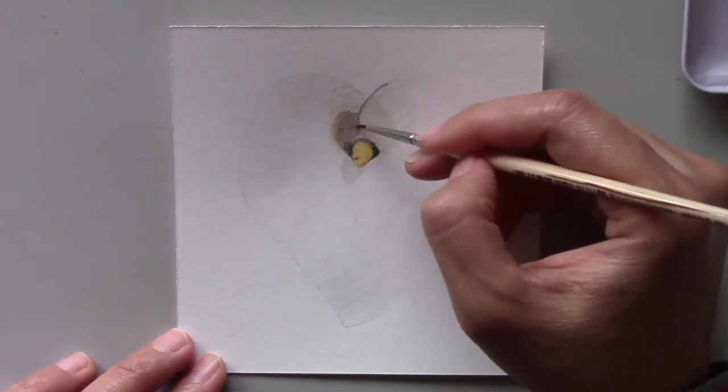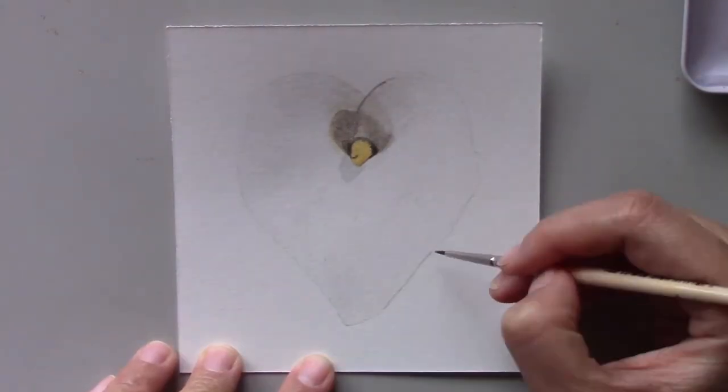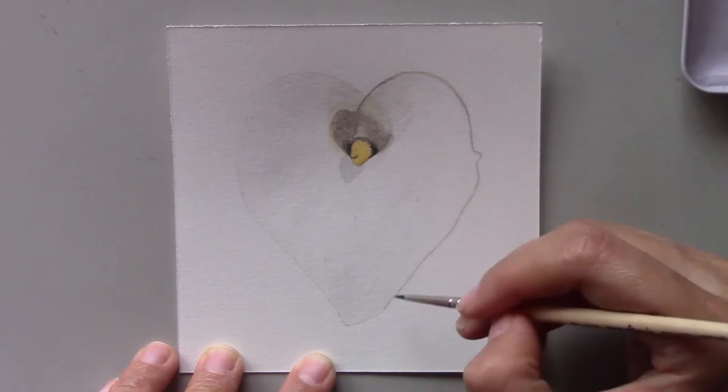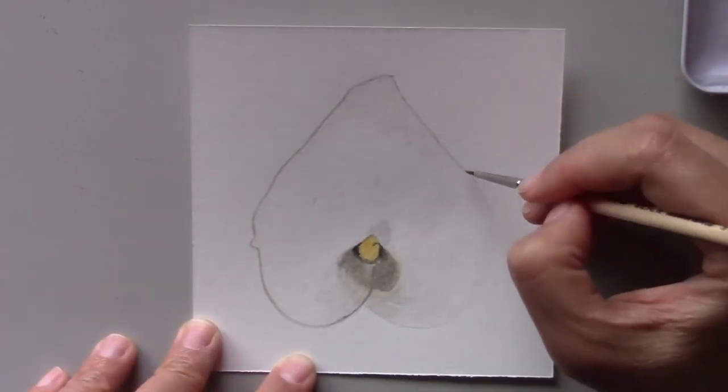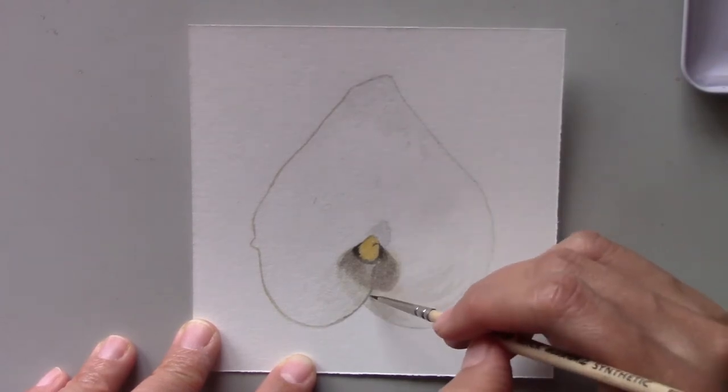This calla lily has only one petal so it's easy to paint. In the top center of the flower, you can see there's an orange spike in a hollow area. That creates a shadow around the spike.